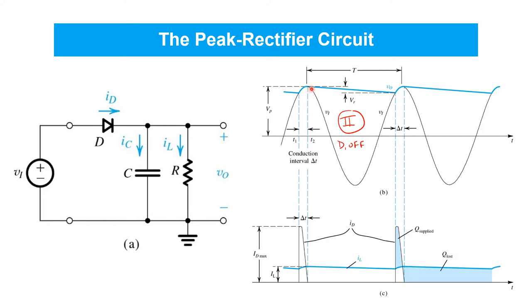But what happens is long before this exponential decay drops very low, the next positive half cycle of VI arrives. As soon as VI, the black waveform here, exceeds the instantaneous value at the output VO, then the diode D becomes forward biased again and it immediately turns on. We're neglecting the 0.7 volt drop using an ideal diode model for now. If we included it, the blue waveform would be shifted down by 0.7 volts.